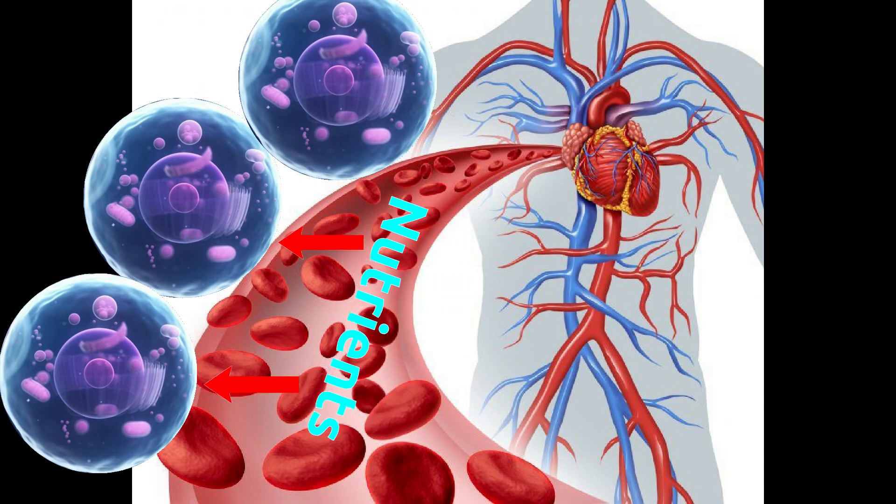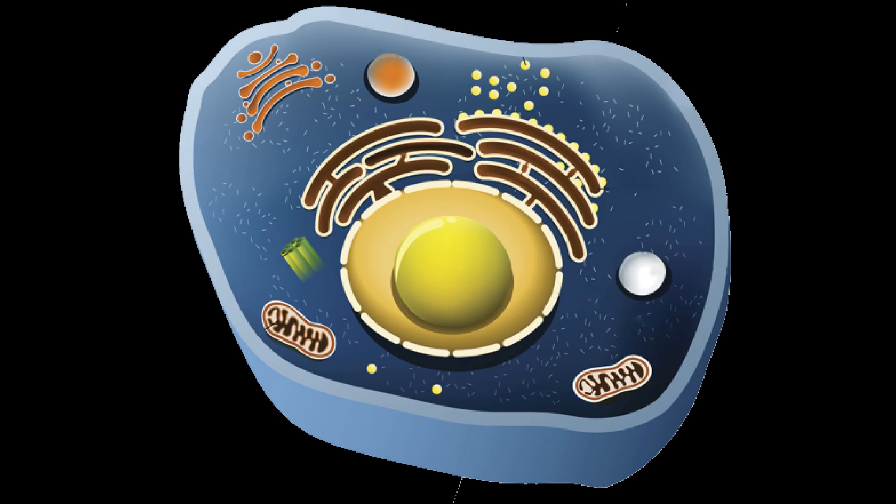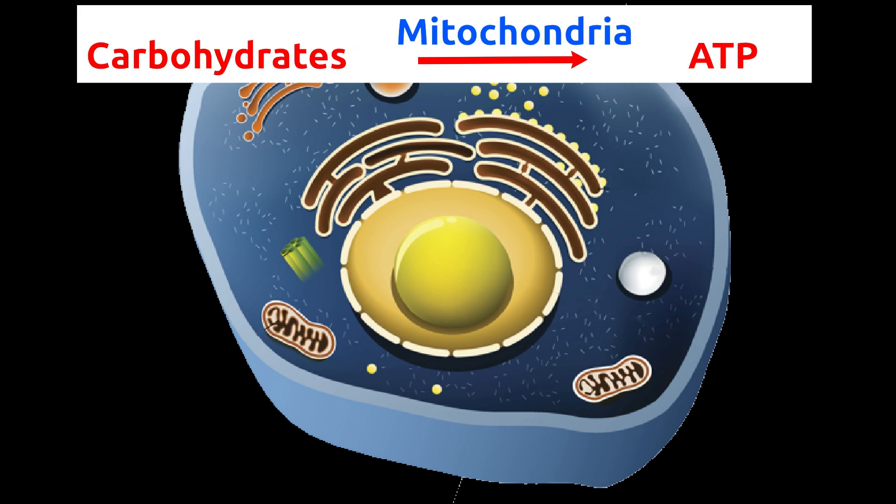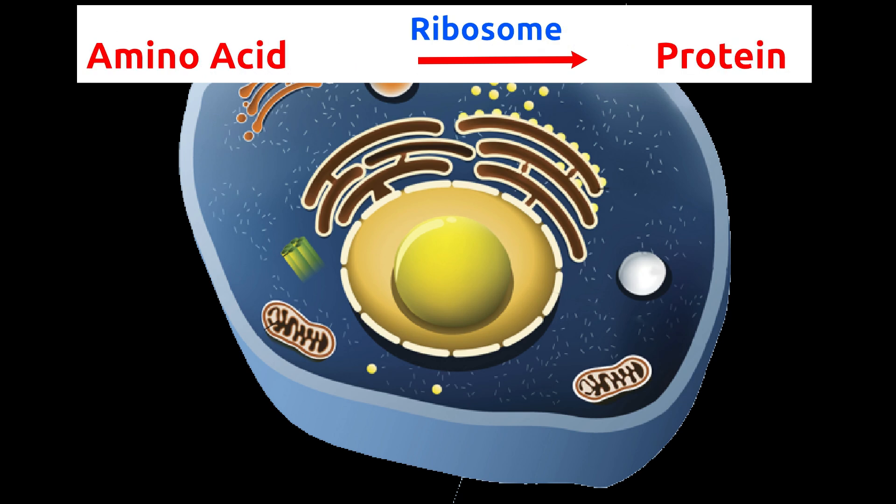Inside the cell, mitochondria converts carbohydrates to ATP compounds. ATP compounds are a source of energy.